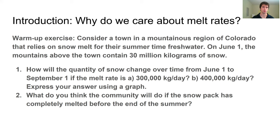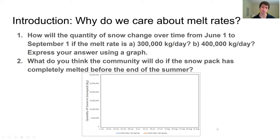Secondly, what do you think the community will do if the snowpack is not completely melted? This is a community that relies on the snowpack for their fresh water during the summer. Here is a template of the kind of graph you might make. The x-axis shows time running from June 1st to August 31st, and on the y-axis is the quantity of snow in the snowpack at any given day. As the problem states, on June 1st we start with 30 million kilograms of snow in the snowpack, and this is going to decrease over time. Your teacher is going to pause me now and give you a chance to work on this problem.